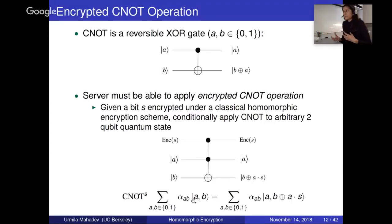There's a question in the chat asking how to parse the operators — specifically whether A·S has precedence. All this is saying is: if S equals zero, nothing happens, it's just B; if S equals one, you're taking B XOR A. So the server is choosing whether to apply the CNOT or not based on an encrypted bit that he cannot see — that's really the difficulty.